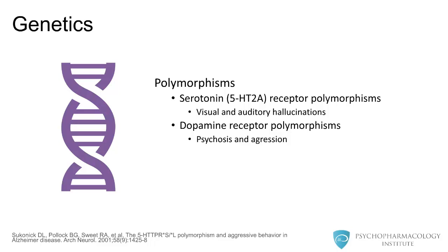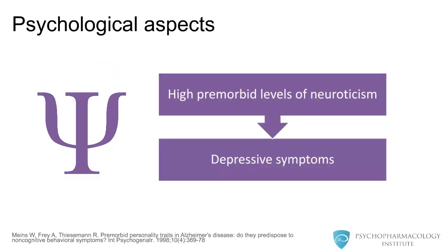Researchers have found that serotonin 5-HT2A receptor polymorphism is associated with greater visual and auditory hallucinations, hyperphagia, and aggression in individuals with dementia. Dopamine receptor polymorphisms are associated with psychosis and aggression. Higher levels of premorbid neuroticism are associated with greater onset of depressive symptoms in individuals with dementia.